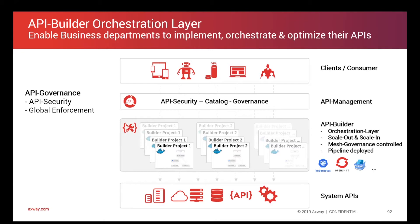Each API Builder project becomes a Docker container which is executed in a Docker orchestration environment like Kubernetes or OpenShift. That environment is responsible for scaling the API Builder containers depending on the load. You can control that with a mesh governance system like Amplify Mesh Governance, where you can attach individual policies — for instance, limiting an API Builder project to 100 calls per minute.